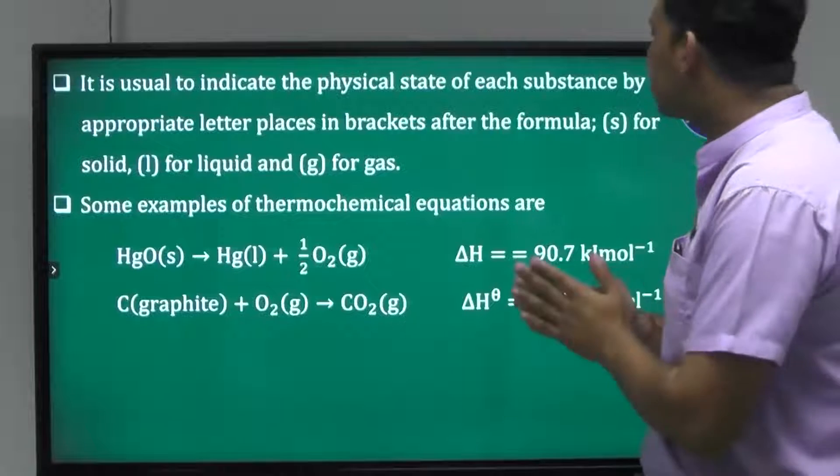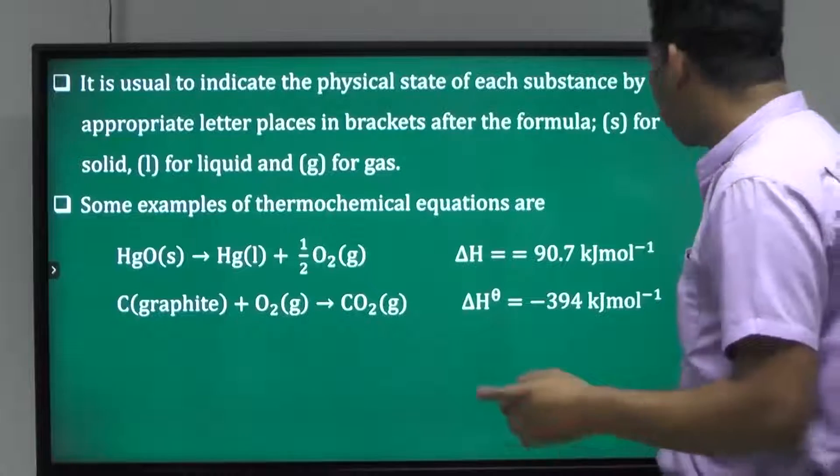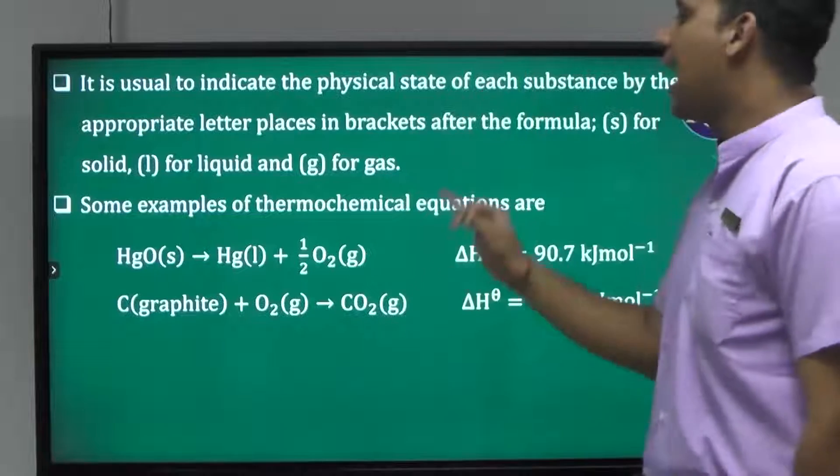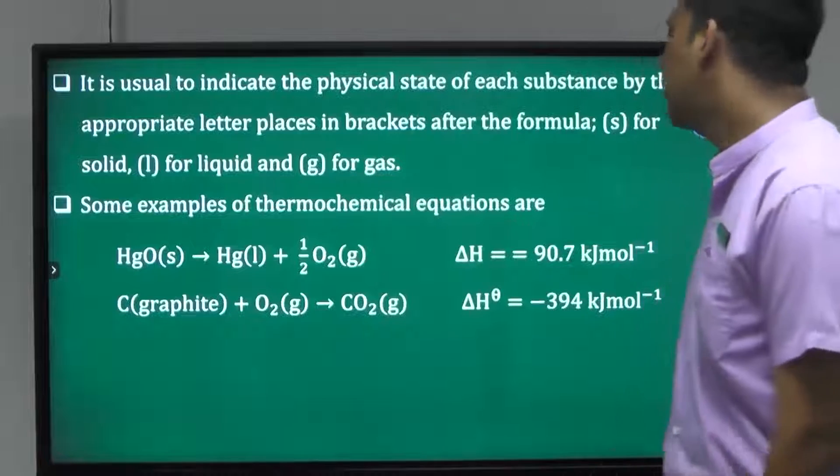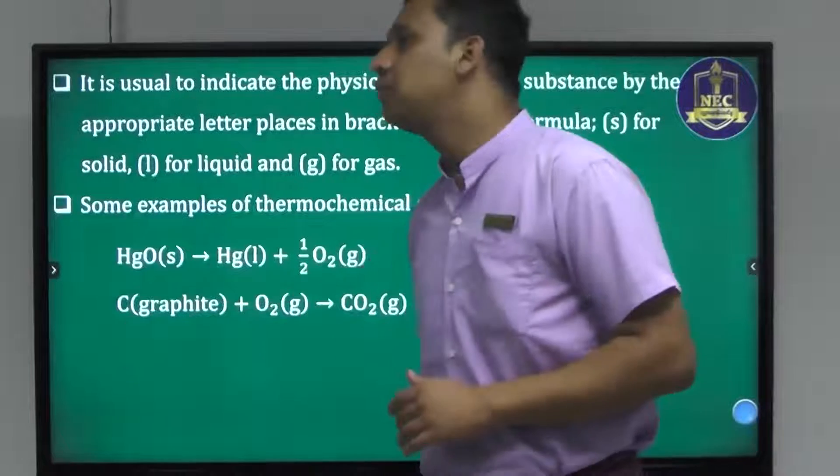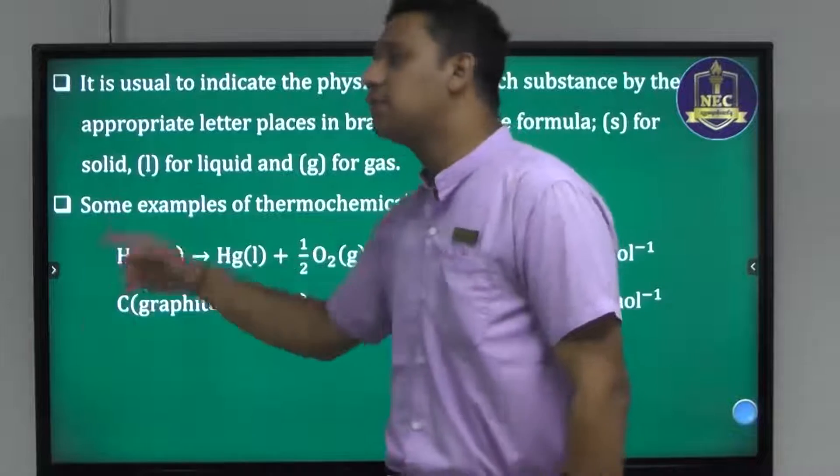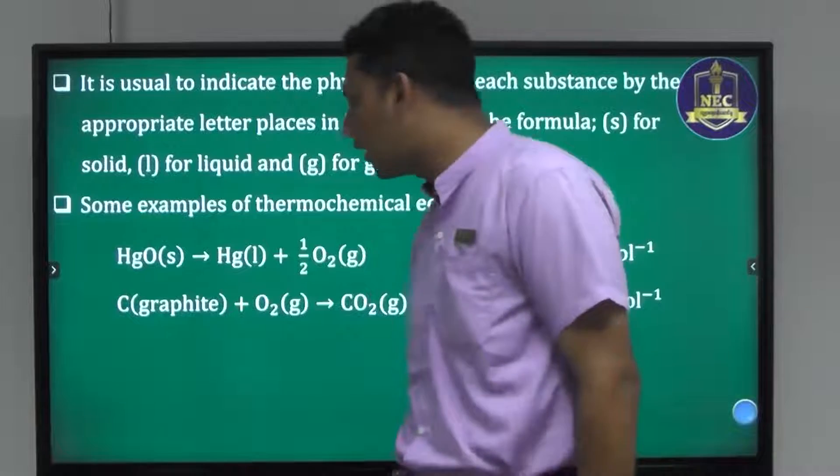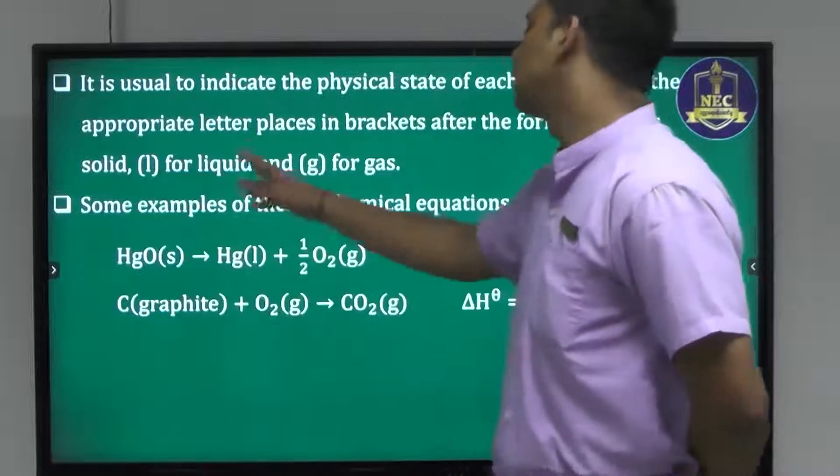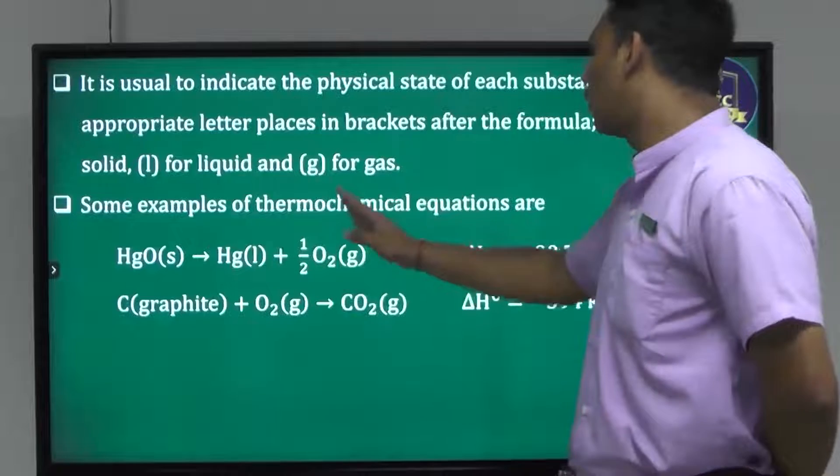Here's an example: mercury oxide. Mercury 2 oxide is solid. When heated, it gives mercury liquid plus oxygen gas.